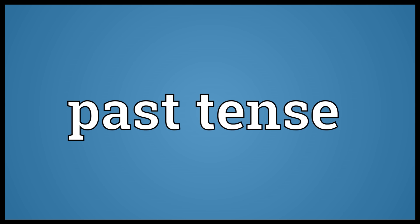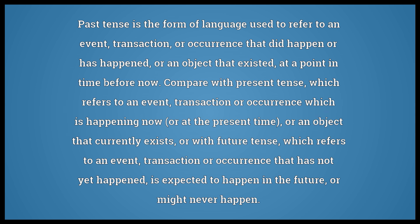Past tense is the form of language used to refer to an event, transaction, or occurrence that did happen or has happened, or an object that existed, at a point in time before now.